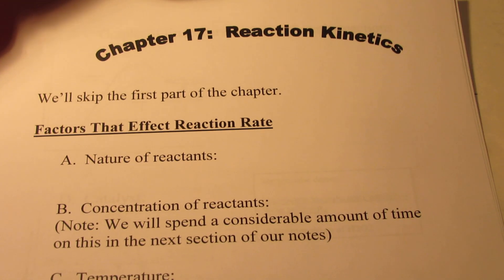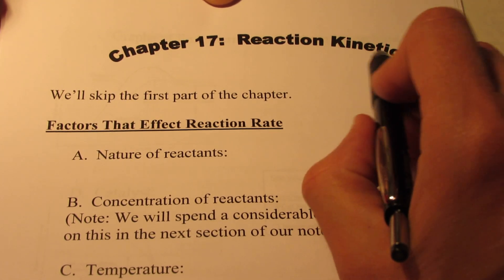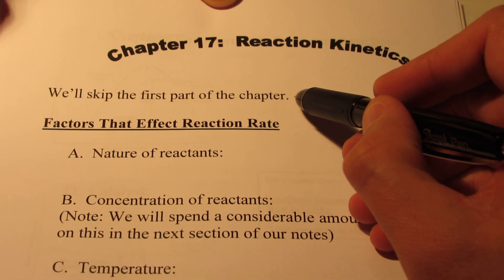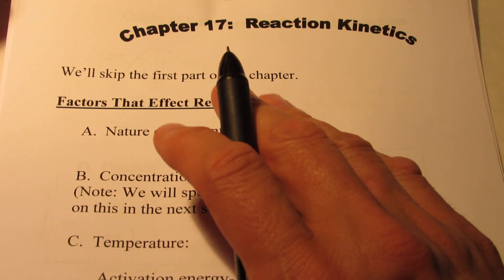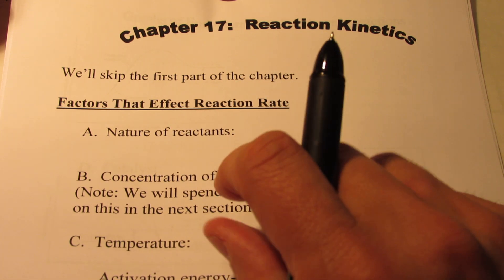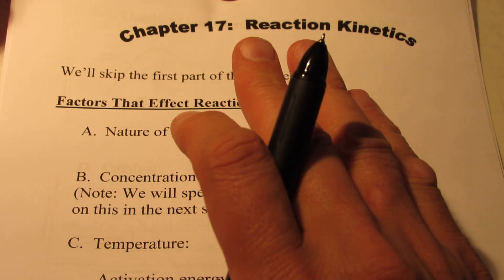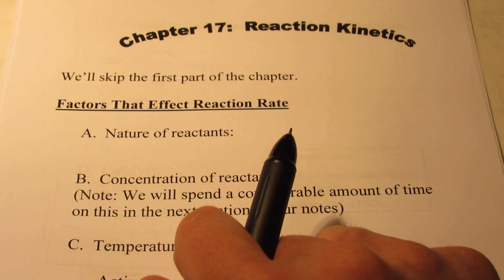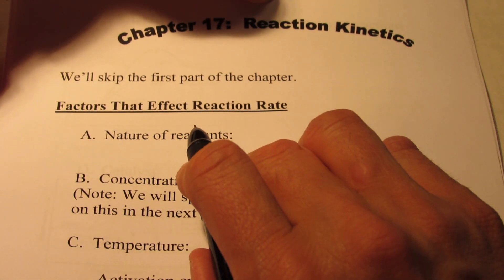Okay, we're going to start a new chapter today. This is chapter 17, and it's on reaction kinetics. Kinetics is another term for the rate of a reaction. We're actually going to skip the first part of the chapter, and we're going to jump right into some factors that affect the rate of a reaction, or how fast a reaction proceeds.